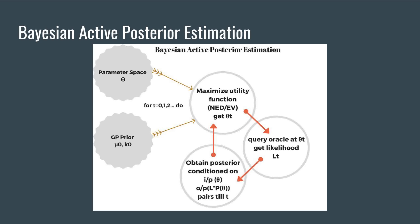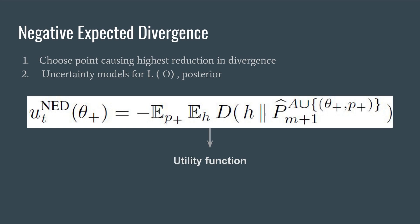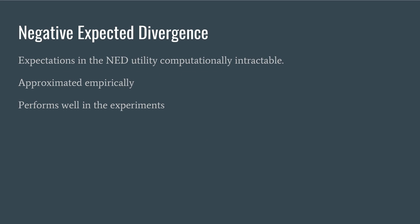In NED, we initially build uncertainty models for likelihood and posterior. We choose a point which causes highest reduction in divergence between these models and the next estimate. The first expectation captures our uncertainty over likelihood, while the second captures our remaining uncertainty over probability. Expectations in the NED utility above are computationally intractable. They can only be approximated empirically by drawing samples and require numerical integration, although it performs well in the experiments performed for comparison with existing algorithms.